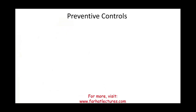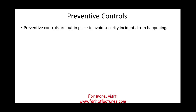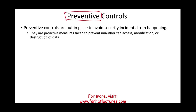Starting with preventive controls — what are they? Preventive controls are in place to avoid a security incident from happening in the first place. You don't want the security incident to happen at all. So you implement preventive controls, which are proactive measures. You are not waiting for something to happen; you are taking action to prevent unauthorized access, unauthorized modification, or destruction of data.